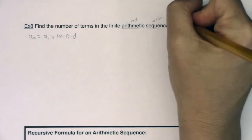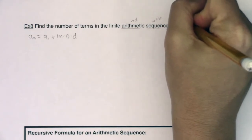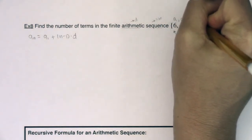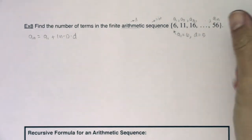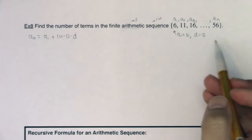Now I don't know what term this is. I know this is a sub 1, a sub 2, a sub 3, and then eventually I get to a sub n being 56. I just don't know if this is the 7th term, the 20th term, the 15th term—I don't know what it is.